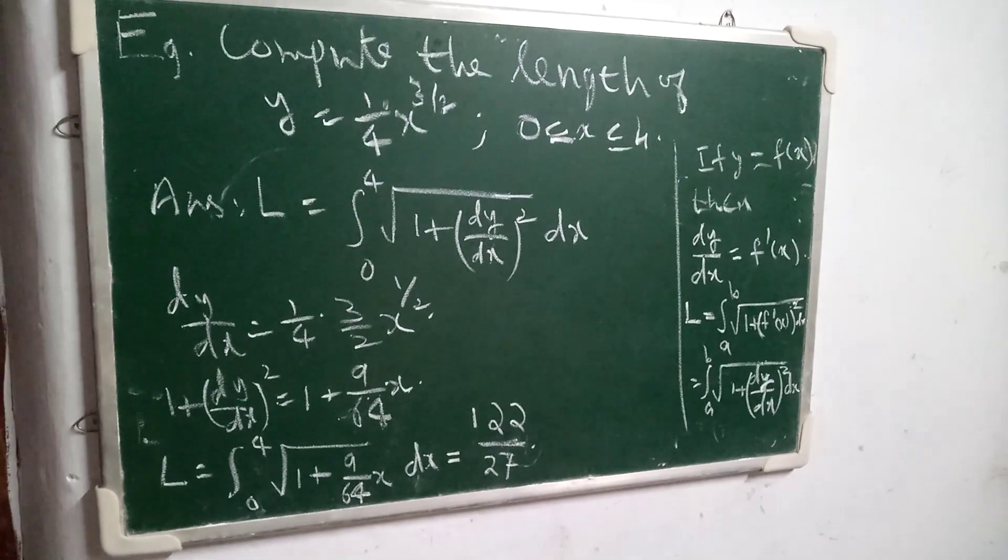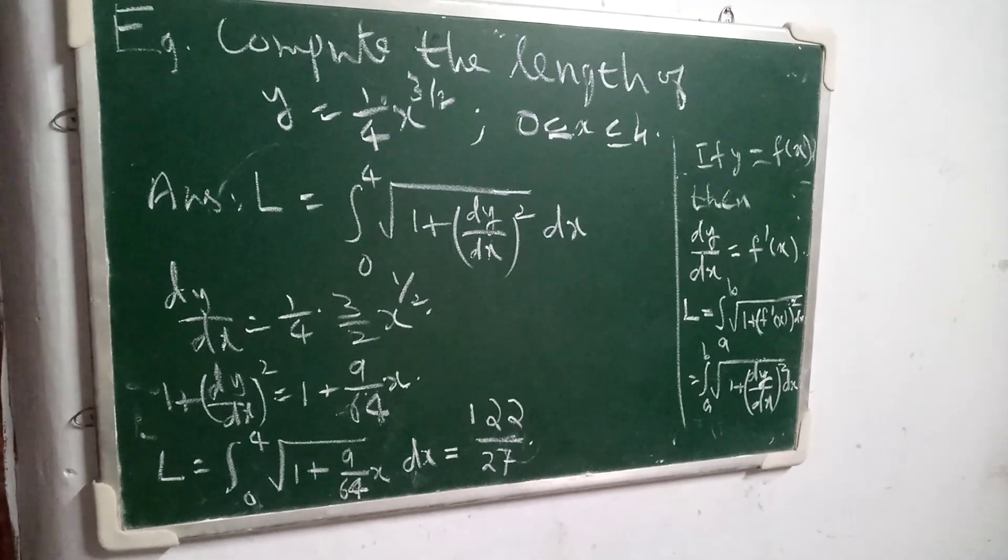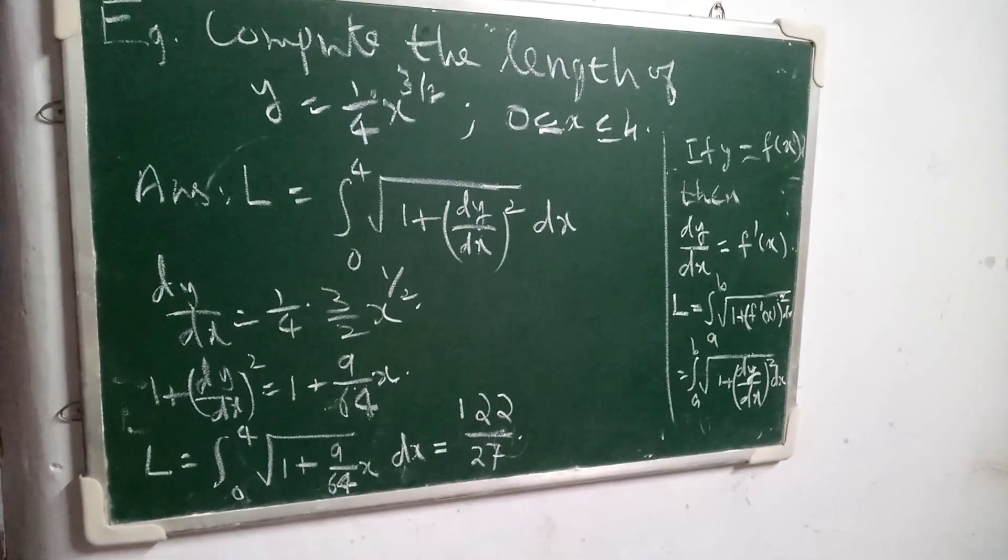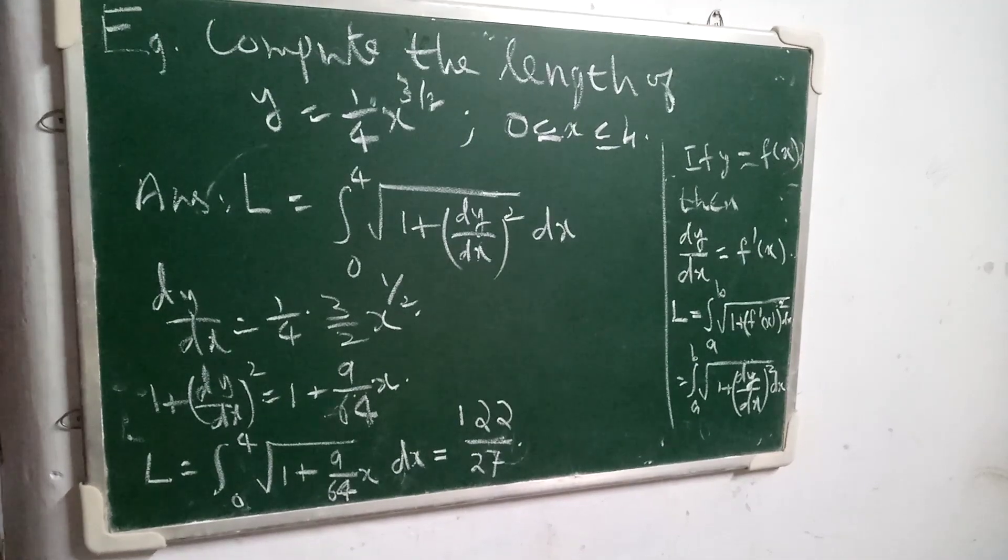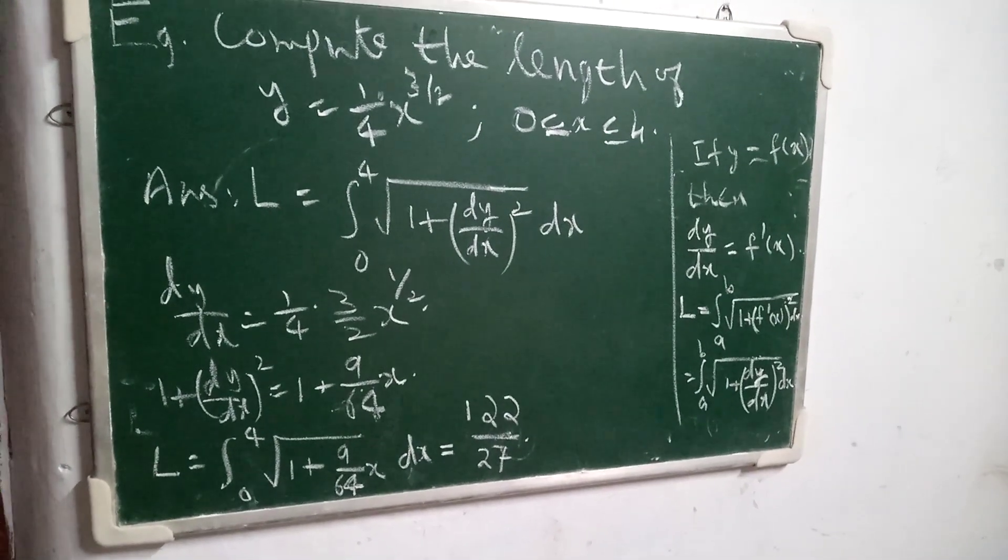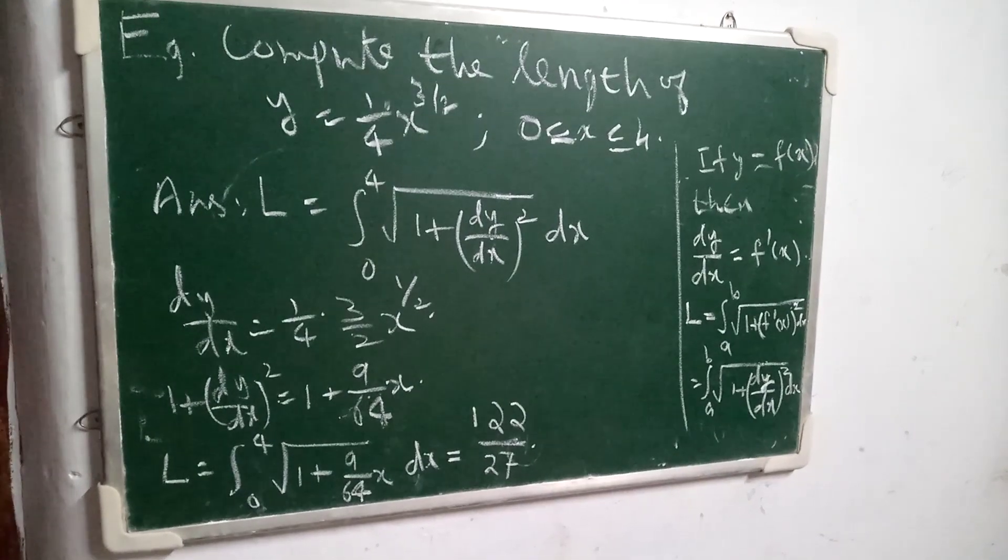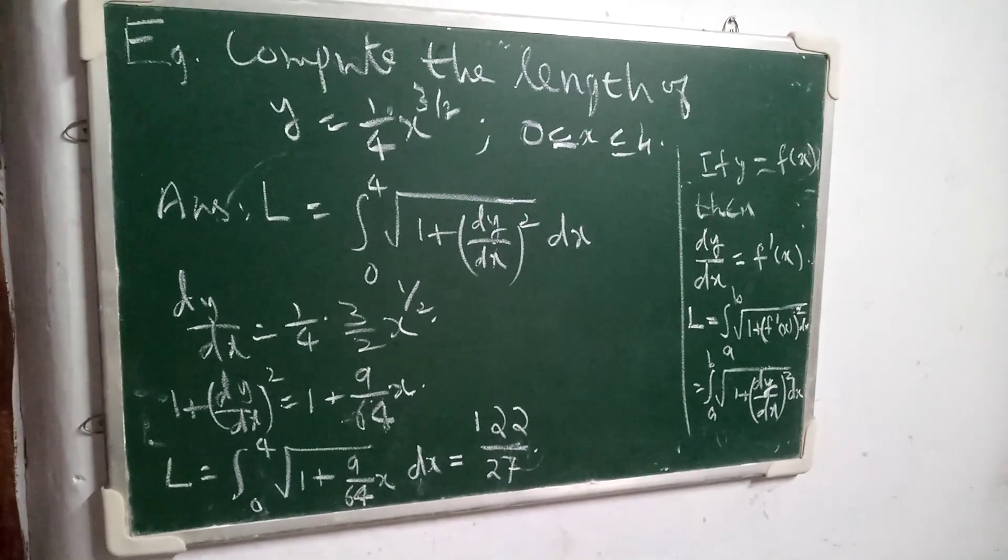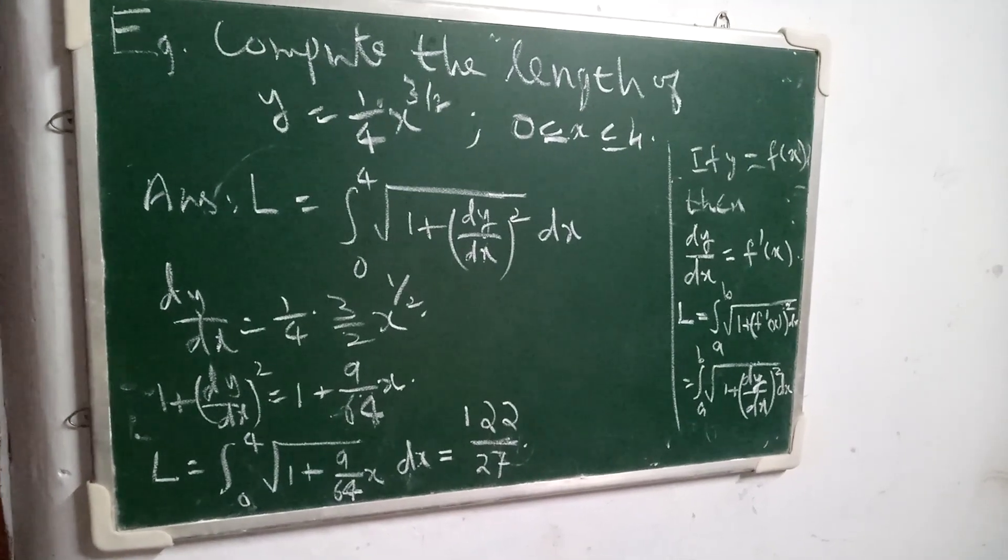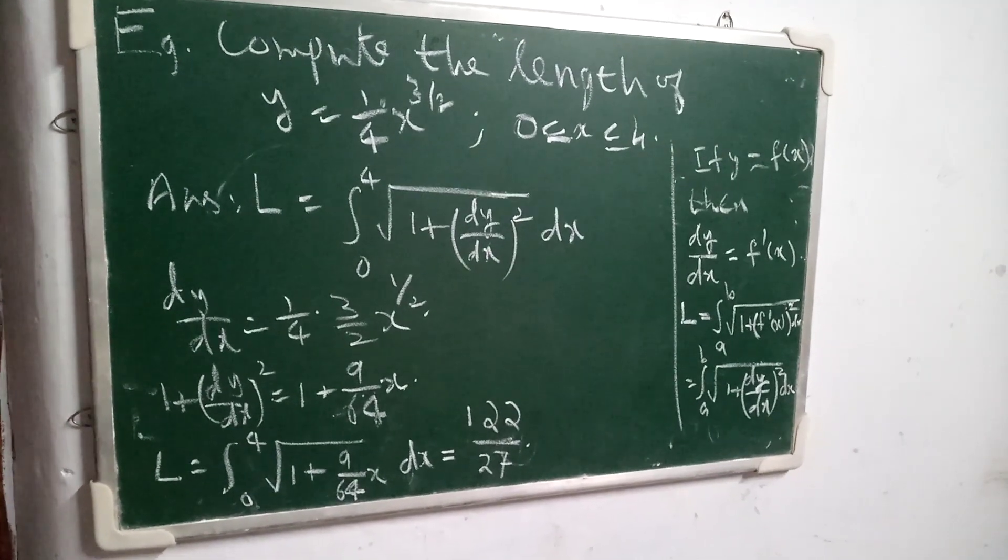Compute 1 plus dy by dx the whole square. It becomes 1 plus 9 by 64 x. And therefore, L is equal to integral 0 to 4 square root of 1 plus 9 by 64 x dx.